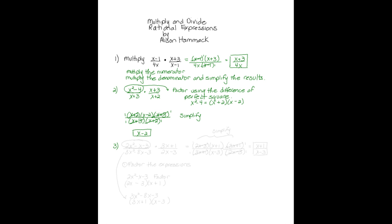Number three: we have a trinomial in the numerator over a trinomial in the denominator, times a binomial in the numerator over a binomial in the denominator. The first thing we need to do is factor the expressions. Looking at the numerator, let's work with two x squared minus x minus three — we need to factor this.